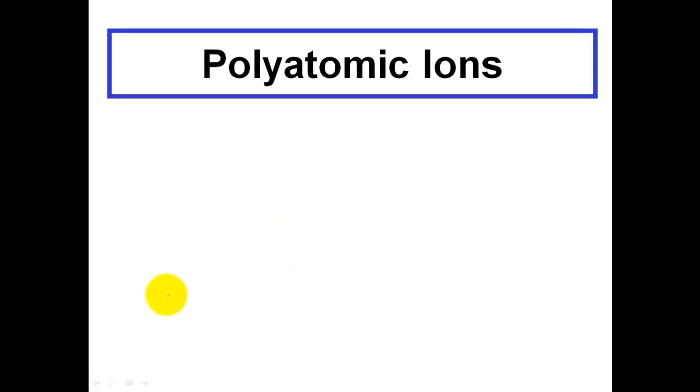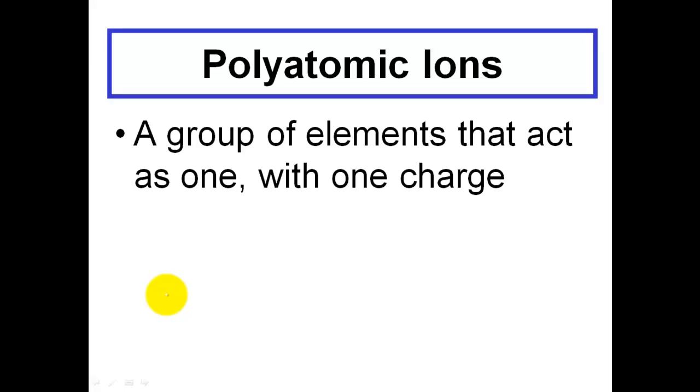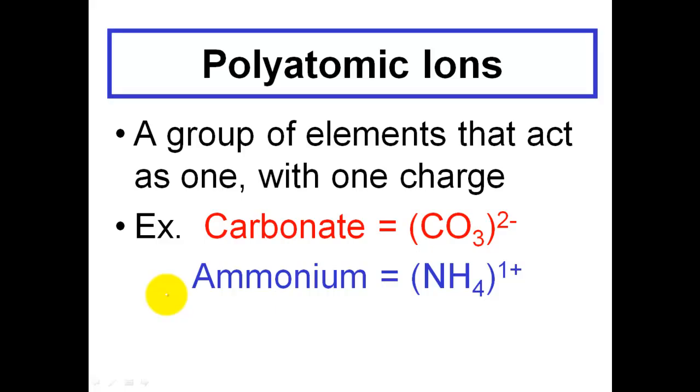So now we're at polyatomic ions. A polyatomic ion is simply a group of elements that act as one, and they carry one charge. A good example of this is carbonate. Carbonate has carbon, it has oxygen as well, and together those two carry a two minus charge.